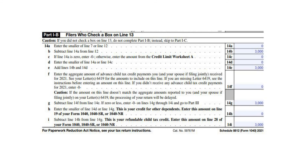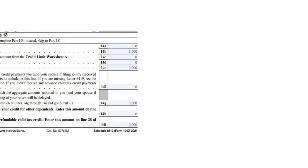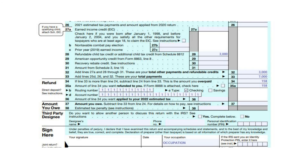This is your refundable child tax credit. We will enter this on Line 28 of your Form 1040. You do need to attach the 8812 to your return but you don't need to attach the Line 5 Worksheet. Carry this amount down to Line 32. On Line 33, add all your payments together, so your withholding plus your credit would be $7,000.